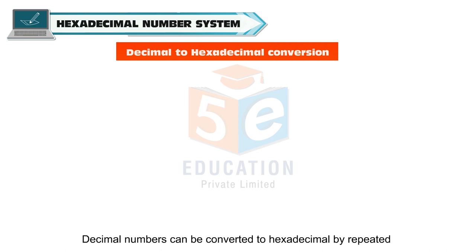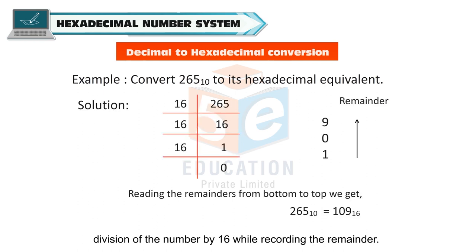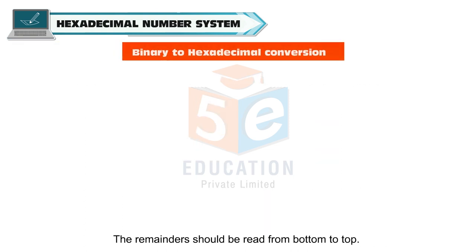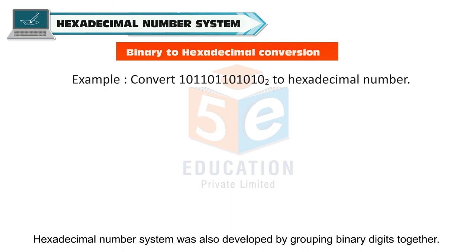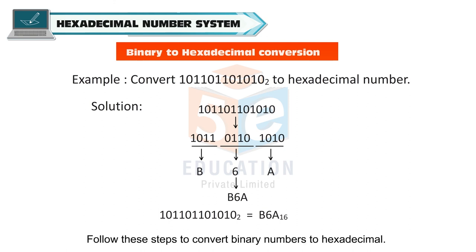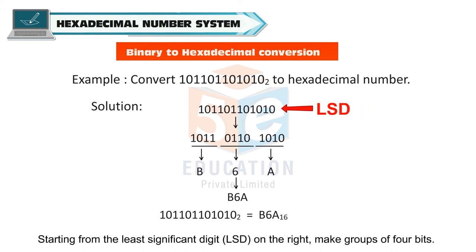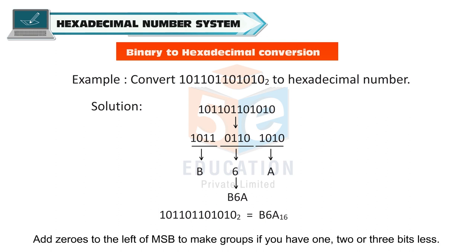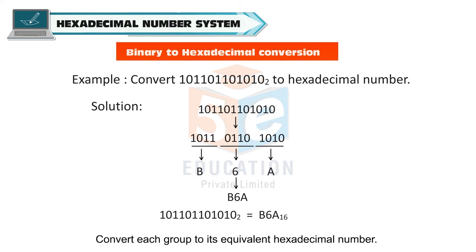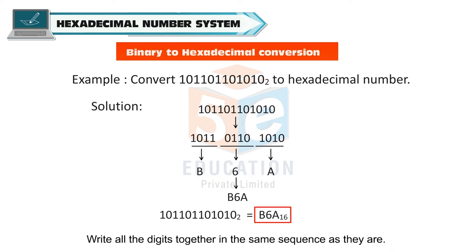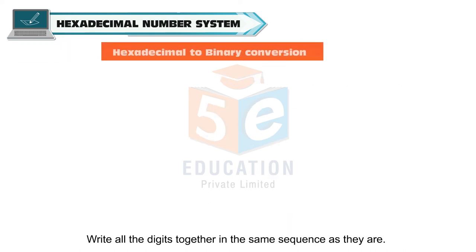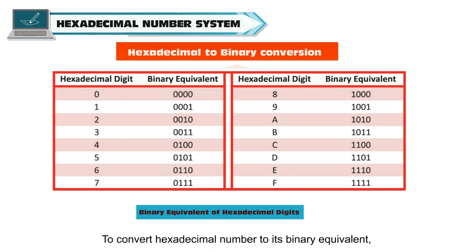Decimal numbers can be converted to hexadecimal by repeated division of the number by 16 while recording the remainder. The remainders should be read from bottom to top. The hexadecimal number system was also developed by grouping binary digits together. To convert binary numbers to hexadecimal, starting from the least significant bit on the right, make groups of 4 bits. Add zeros to the left of the MSB to make groups if you have 1, 2, or 3 bits less. Now, convert each group to its equivalent hexadecimal number, then write all the digits together in the same sequence.